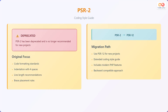Now let's explore PSR2, which is the coding style guide. It's important to note that PSR2 has been deprecated and is no longer recommended for new projects. However, it's still worth understanding its original focus, which centered on code formatting standards, indentation with four spaces, line length recommendations, and brace placement rules. You should consider that PSR12 is the current standard for the coding style guide.